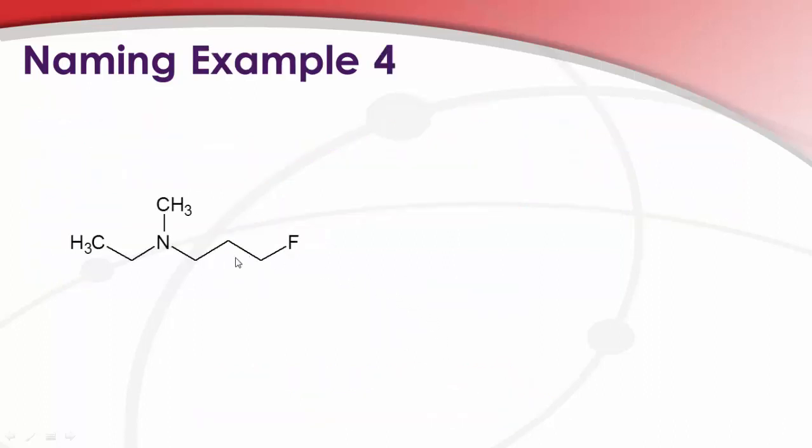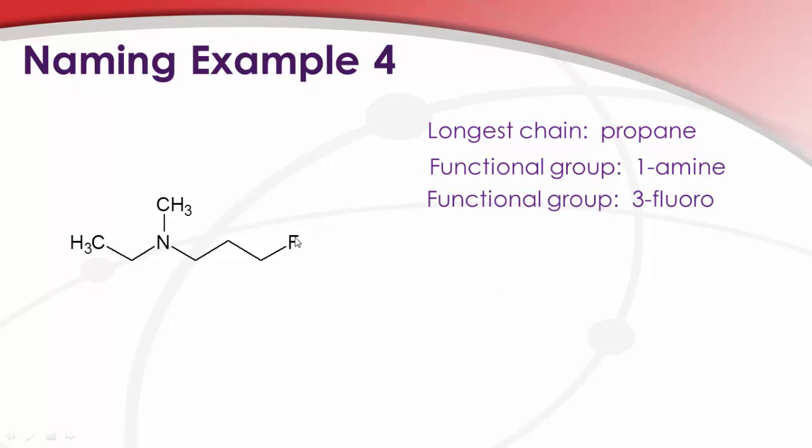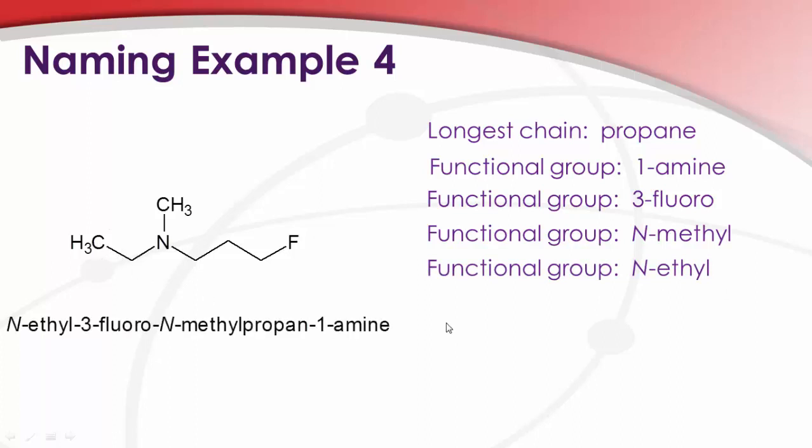Okay, so let's take another example. This is a tertiary amine, of course, because it's attached in three places. Our longest chain, one, two, three propane. Functional group, we have the one amine on that propane. We have a second functional group on that propane, which is the three fluoro. And then on the amine itself, we have two more functional groups, the N-ethyl and the N-methyl. When we pull all of this together, using our alpha order, we have our propan-1-amine, N-ethyl, 3-fluoro, and methyl. It's really pretty straightforward once you get used to it.